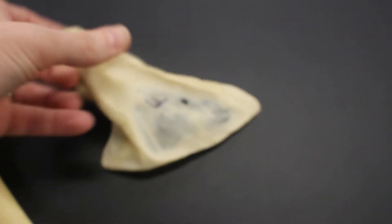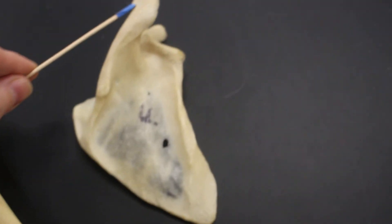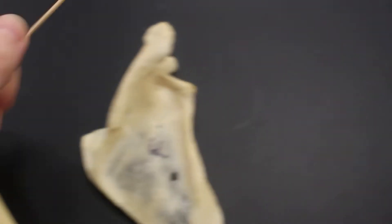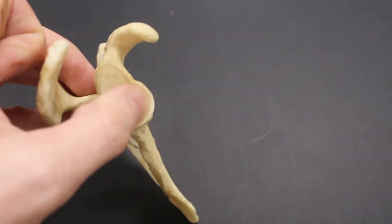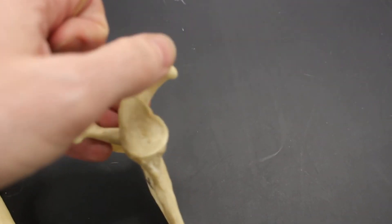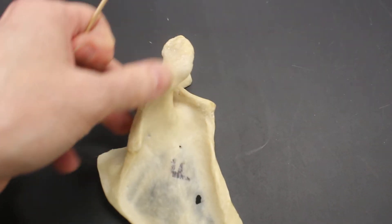Important structures on the scapula include the spine of the scapula, the glenoid cavity, the acromion process found at the end of the spine, and the coracoid process. So: glenoid cavity, coracoid process, acromion process, spine.